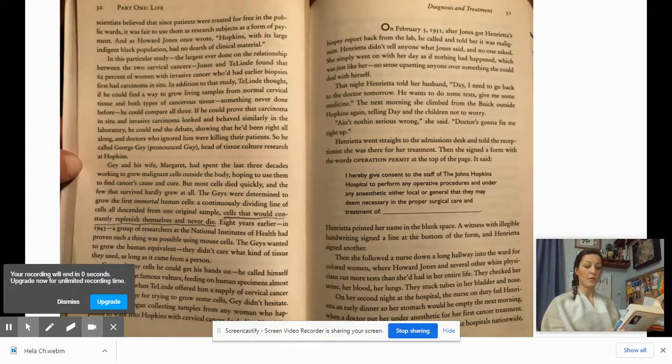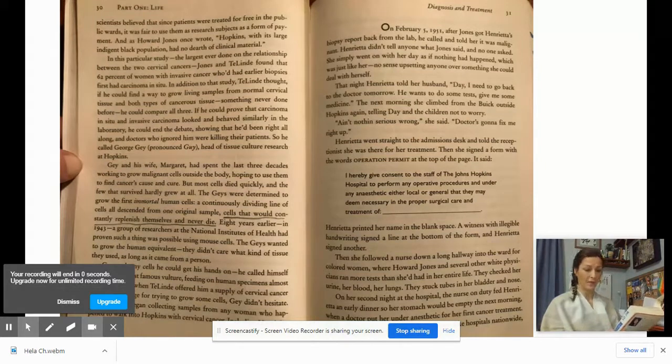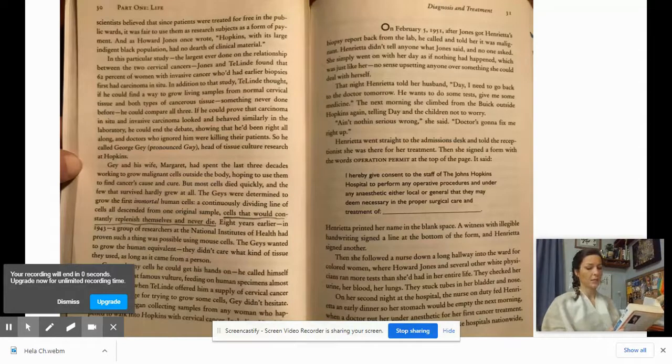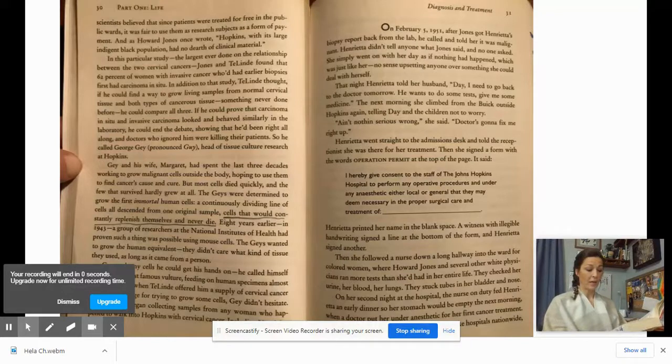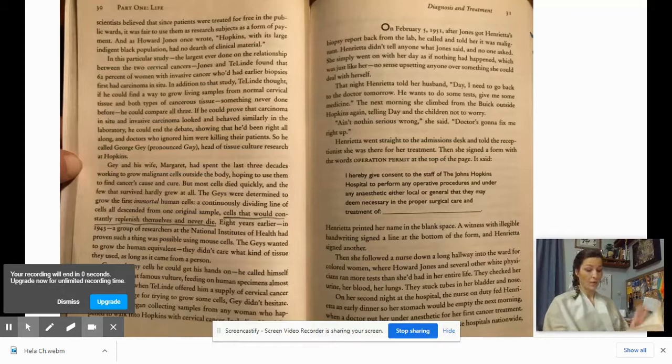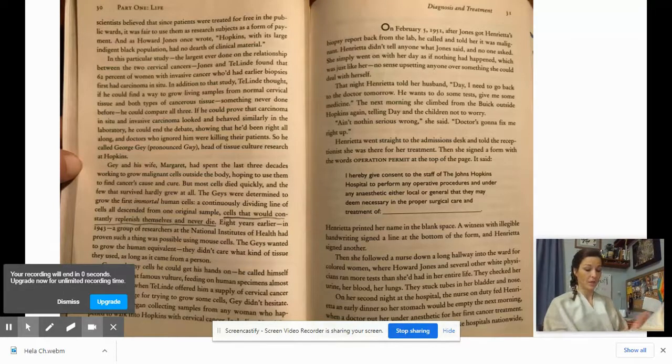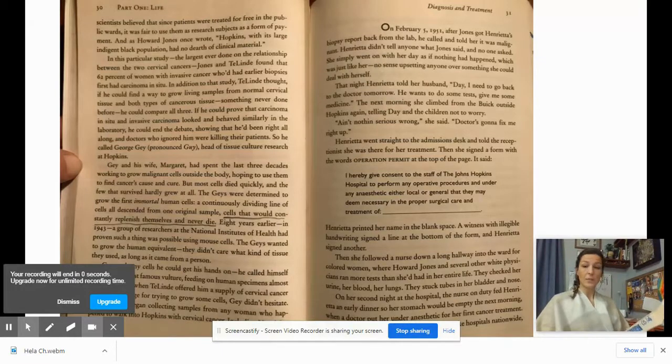Then she followed a nurse down a long hallway into the ward for colored women, where Howard Jones and several other white physicians ran more tests than she'd had in her entire life. They checked her urine, her blood, her lungs. They stuck tubes in her bladder and her nose. And on her second night at the hospital, the nurse on duty found Henrietta an early dinner so her stomach would be empty the next morning, when a doctor put her under anesthetic for her first cancer treatment.